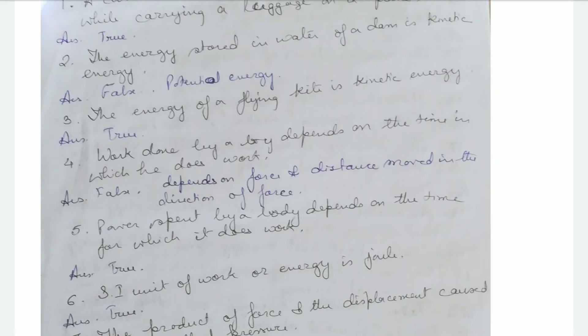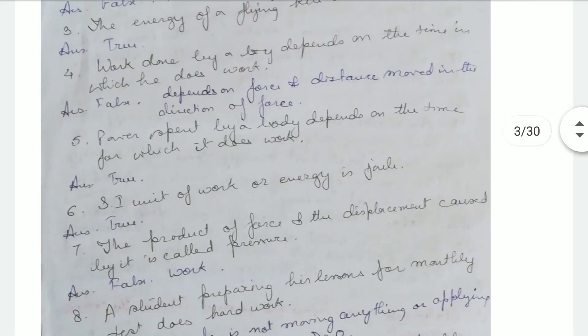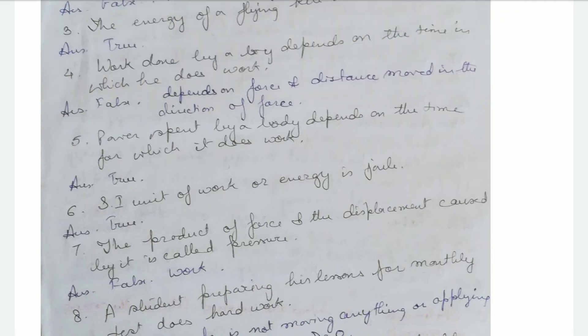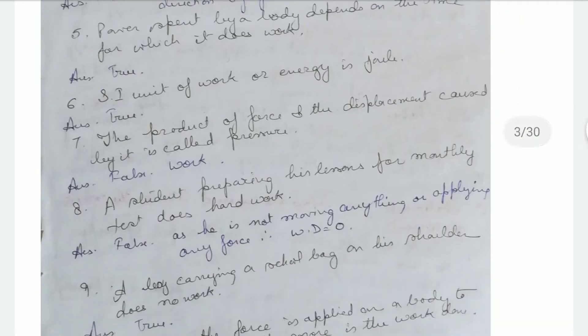Work done by a boy depends on the time in which he does work — false. It depends on the force and the distance moved in the direction of the force. The power spent by a body depends on the time for which it does work — that's true. The SI unit of work or energy is joule — that's true. The product of force and displacement caused by it is called pressure — that's false. That is work.